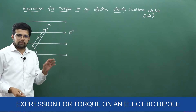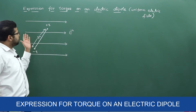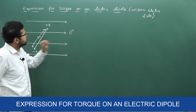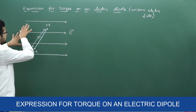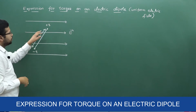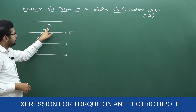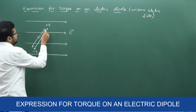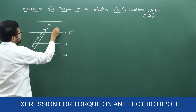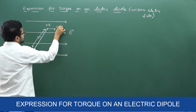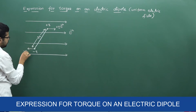The positive charge experiences a force in the direction of the electric field — the field lines go from left to right, away from positive charges. So this positive charge experiences a repulsive force in the direction of the electric field. Force on positive charge is plus QE, and force on negative charge is minus QE.